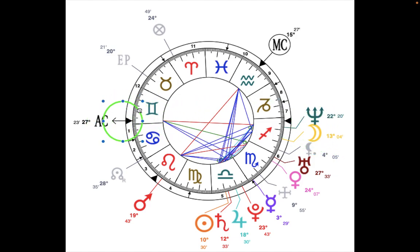So let's take a look at his rising. The rising is in Gemini, the ruler being Mercury, and it is in Scorpio. So the ruler of his rising is in Scorpio, which is ruled by Mars and Pluto.